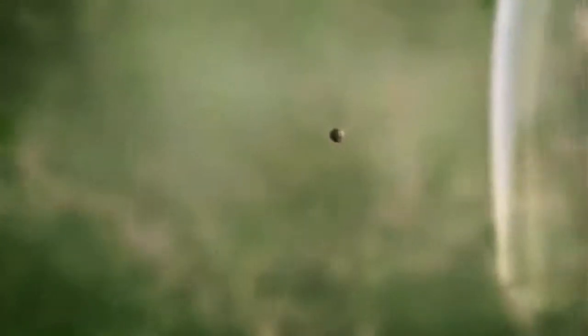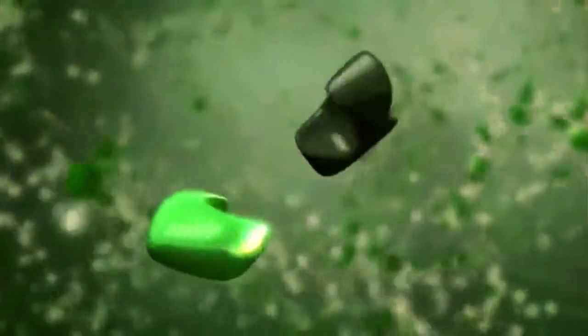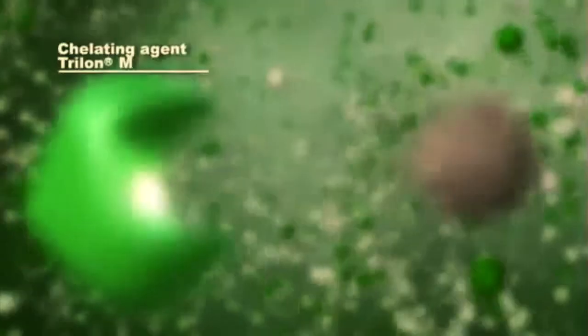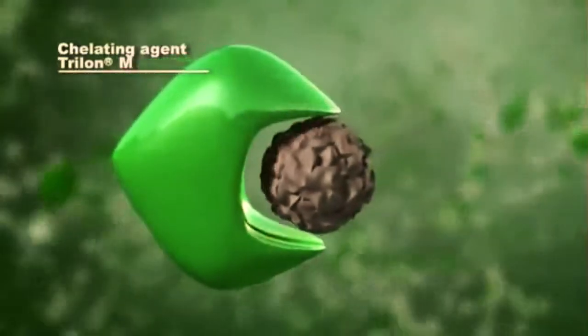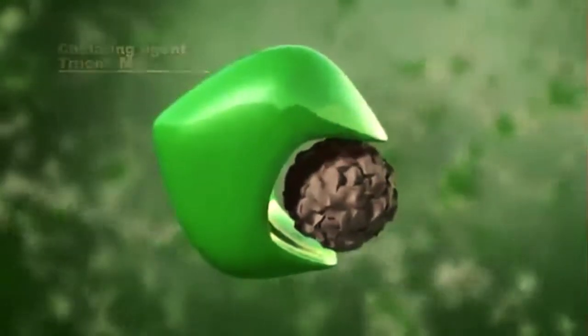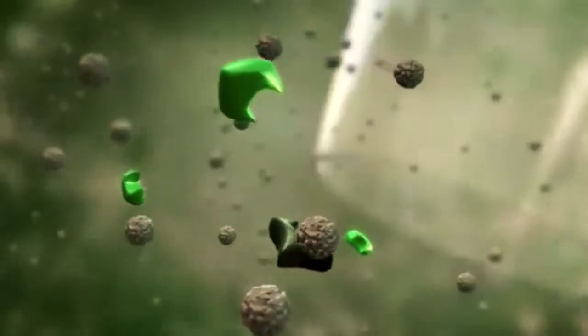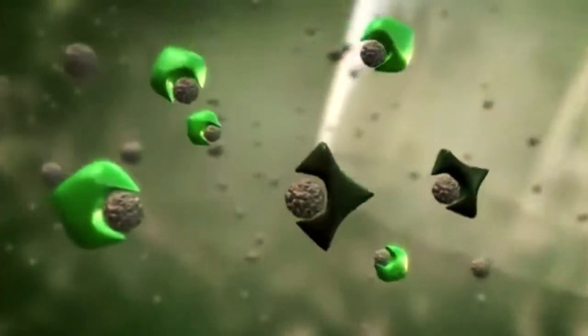The wash water contains metal ions that leave scale deposits on glassware and dishes. The so-called chelating agents like Trilon-M trap these troublesome ions and literally hold them in a tight grip. The otherwise hardly soluble limescale then becomes water soluble.